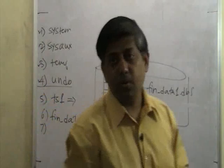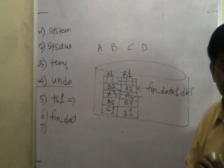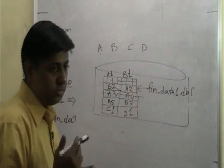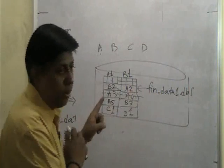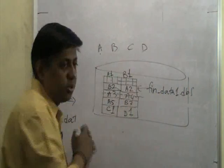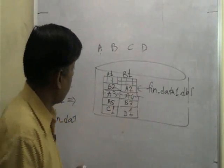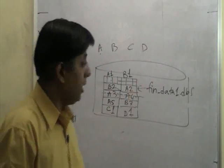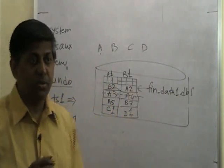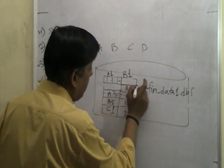Let's say this is fin_data1.dbf and this is fin_data2.dbf. If I back up only fin_data1.dbf, that's not sufficient because half of my table is in fin_data2 and half is in fin_data1. That's why when you back up, you should usually back up the whole tablespace. I cannot pinpoint exactly where one segment is - a segment is spread all across the tablespace, but I can show you an extent because it is contiguous.